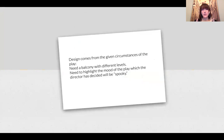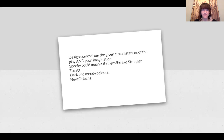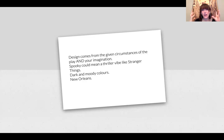Design comes from the given circumstances of the play. I know I need a balcony with different levels and I need to highlight the mood of the play, which the director — who I am also playing, and who you will be playing for your presentation — has decided will be spooky. Spooky could mean a thriller vibe like Stranger Things, because that's what's inspiring me right now. I'm going for dark and moody colors, thinking New Orleans, creepy and fantastical creatures on the revelers at the party — things that would put my audience off balance and give a counterpoint to where people usually go with this play.